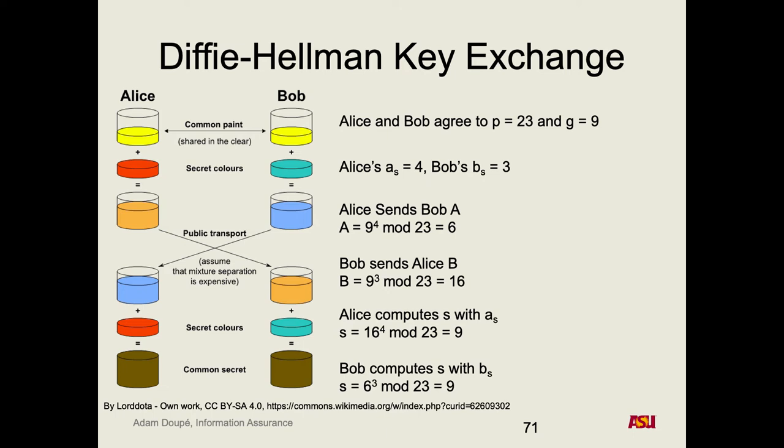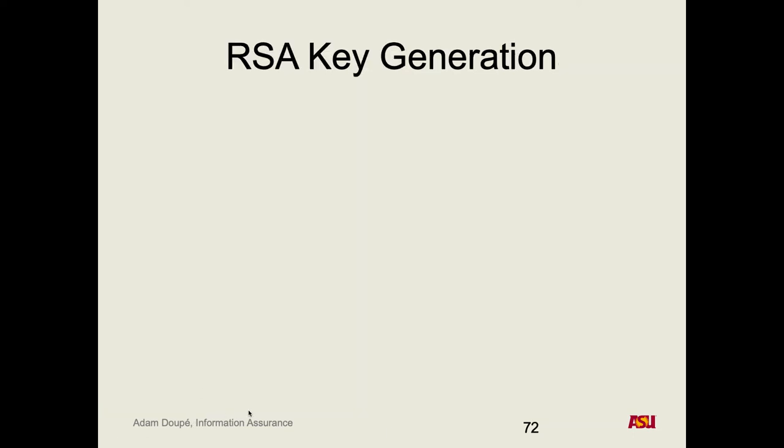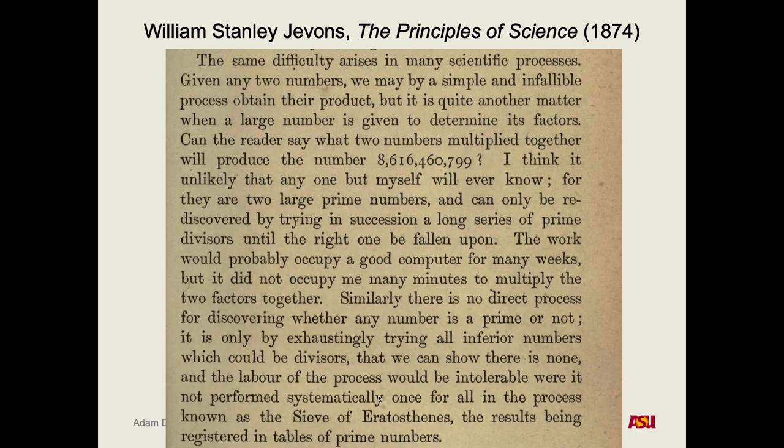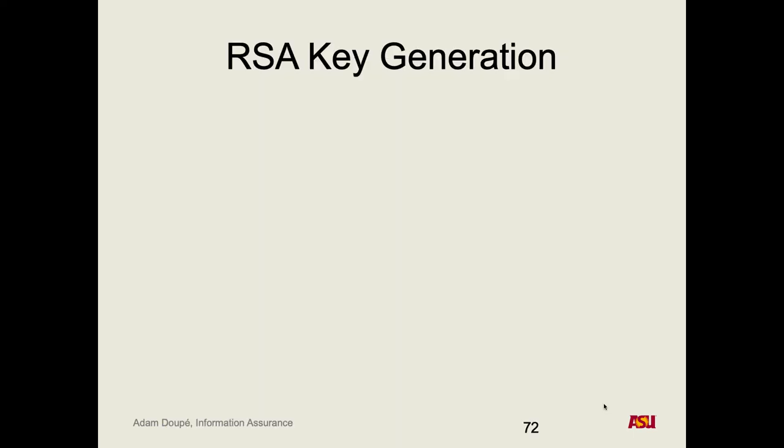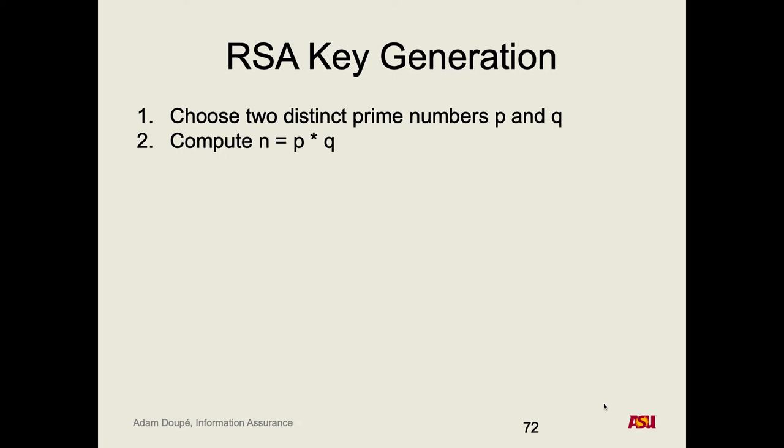I don't expect you to know exactly why this works — I want you to know the intuition behind what's attempting to be going on here, and what the end result of all this computation is. RSA is going to be built on exactly that idea present in that 1874 paper about prime numbers. Just like Bill did, you choose two distinct prime numbers P and Q. You multiply them together — a simple operation computers can do quickly. And the idea that everything is based on is: if we have N equals P times Q, it is difficult to factor N back into P and Q.